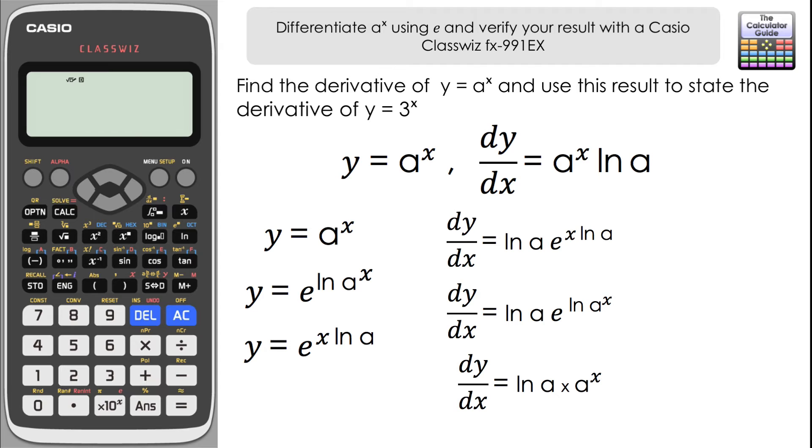Generally to make it more tidy without the multiplication sign, we just write it the other way around, so a to the power of x then followed by natural log of a, which was the original result we had at the very beginning. Again, probably much easier to just remember that form, but if you prefer working with the method, then you can use this method through e, provided you know how to differentiate with e and you know your laws of logarithms well.